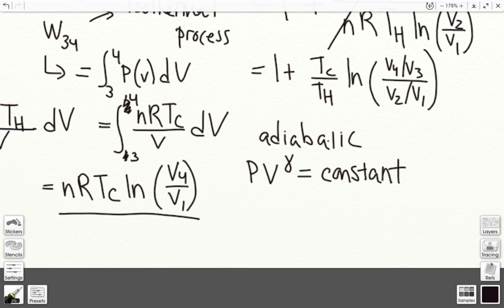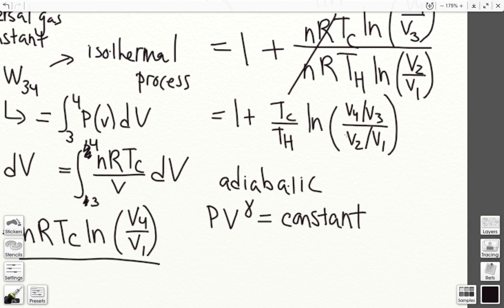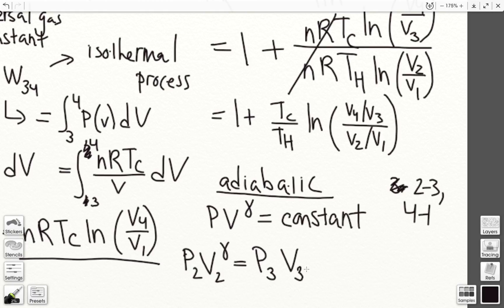we know that PV to the gamma is constant throughout an adiabatic process. So now, we know that the processes from 2 to 3 and from 4 to 1 are adiabatic.